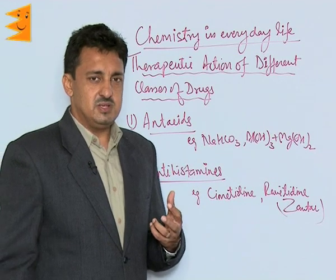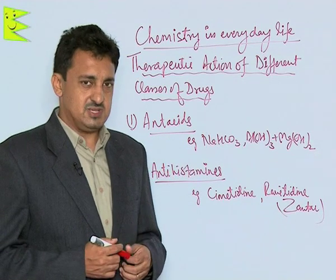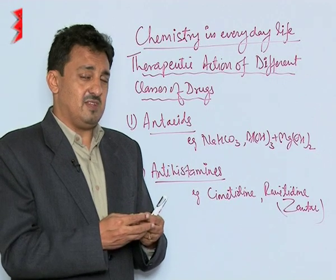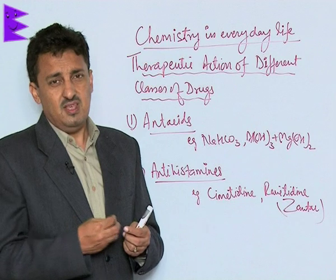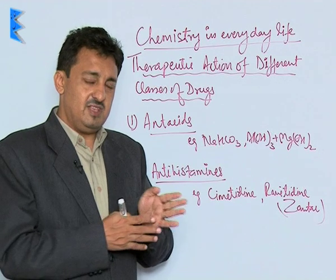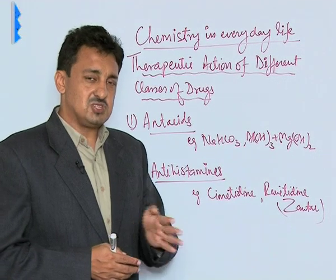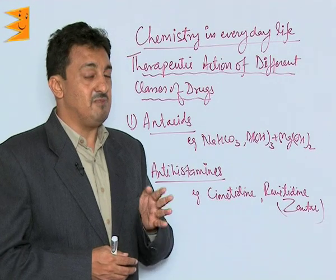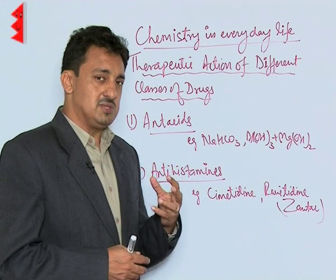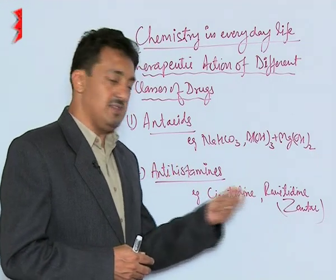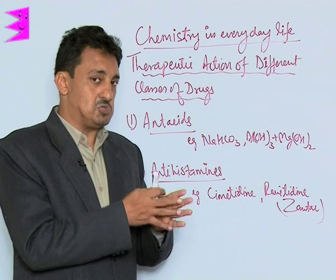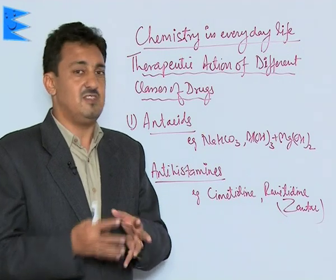A very important discovery made a lot of difference in the treatment of hyperacidity. It was realized that certain substances interact with receptors in the stomach which secrete pepsin and HCl. Drugs were developed which stop the interaction of these chemical substances with those receptors. Such drugs are called antihistamines, but they prevent the secretion of HCl in the stomach. The two most common drugs of this category are Cimetidine and Ranitidine, and they are the largest selling drugs in this category.